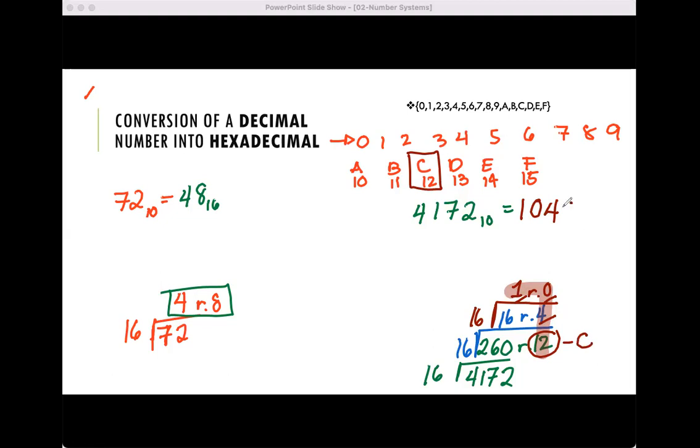Now how about if we convert it back? Like this one, let's convert it back to decimal. That's quite simple. All you have to do is write the 4 and the 8. Let's start here: that's 16 raised to 0, which is just equal to 1, and then this is times 16 raised to 1. And then you add it.